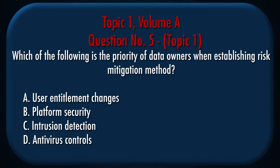Question number 5, Topic 1. Which of the following is the priority of data owners when establishing risk mitigation method? A. User entitlement changes. B. Platform security. C. Intrusion detection. D. Antivirus controls.